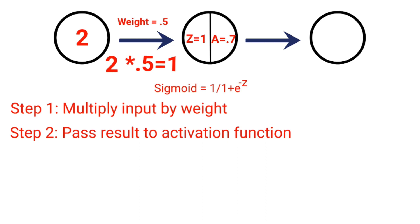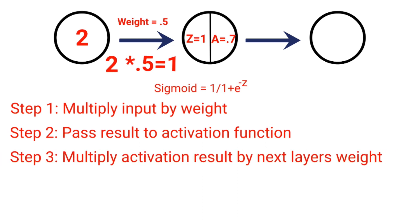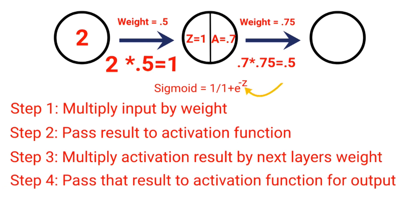Now, we then take that value of 0.7 and pass that to our next weights, or multiply that by our next weights, in the next layer. And for this example, let's use a weight of 0.75. So we have 0.7 times 0.75 equals 0.5. We then pass that value, again, to our sigmoid activation function.